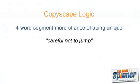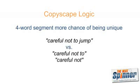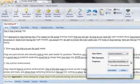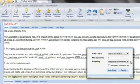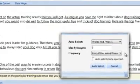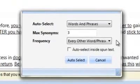This assumption is based on the fact that a four-word combination is statistically more prone to be unique, both in terms of author and content, than a three-word, two-word, or one-word segment. It is for this reason that Copyscape, and most likely the search engines, will only flag duplication on four-word phrase matches. So, our strategy rests on changing every fourth word or better, and we can do this automatically with the Auto-Select Synonyms Frequency option.